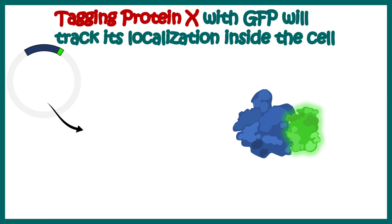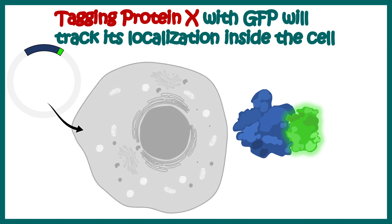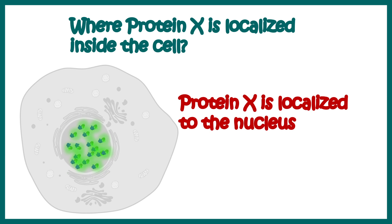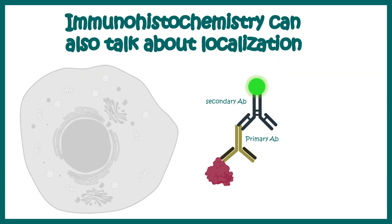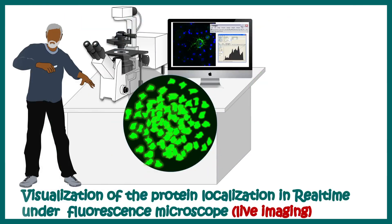We can put an N-terminal or C-terminal GFP tag, transfect those plasmids into the cell, and whenever there is translation of these plasmids a GFP-tagged protein would be generated. Wherever this protein localizes, we can understand its localization with the help of fluorescence. In this case the protein localization is predominantly in the nucleus. Immunohistochemistry can also reveal protein localization, but it cannot tell us localization in real time. With an endogenous protein tag we are able to monitor protein localization in real time inside a live system.